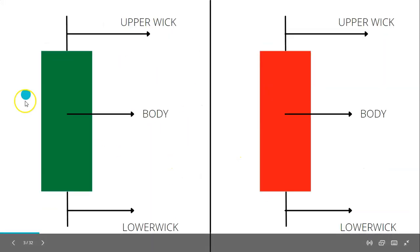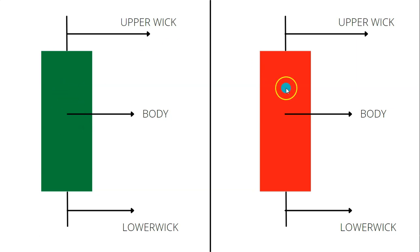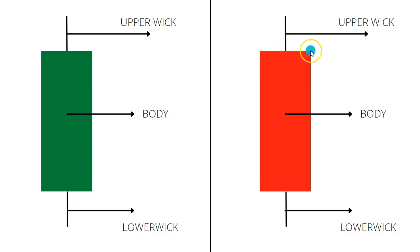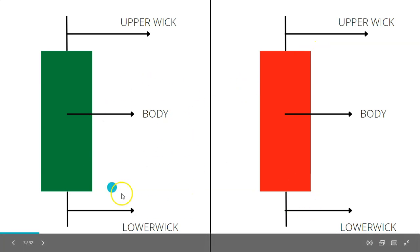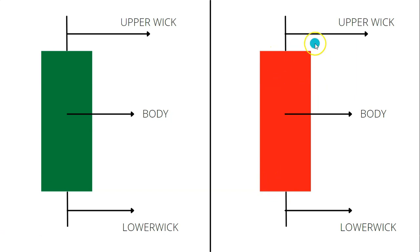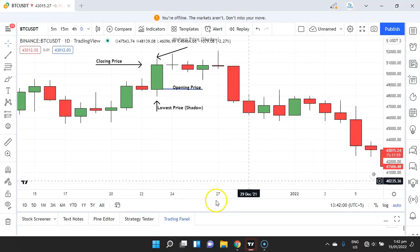There are two types of candlesticks: the green one is the bullish candlestick and the red one is the bearish candlestick. The area between the opening and closing price is called the body. The line above the body is the upper wick or shadow, and the line below is the lower wick or shadow. This applies to both bullish and bearish candlesticks.